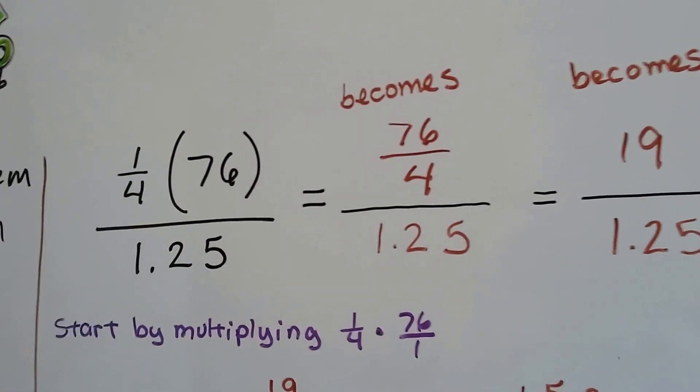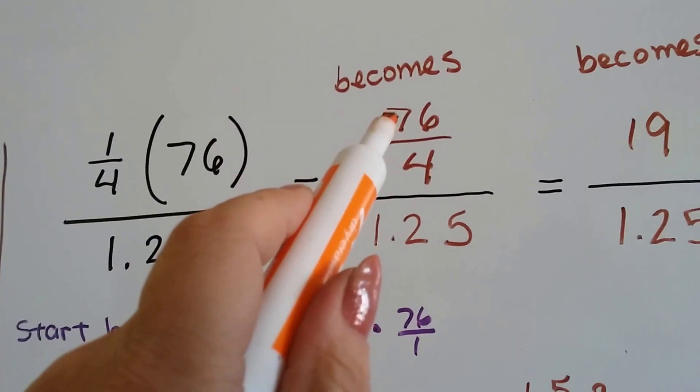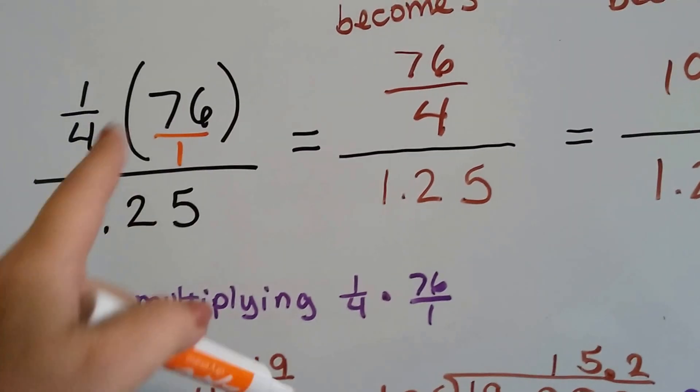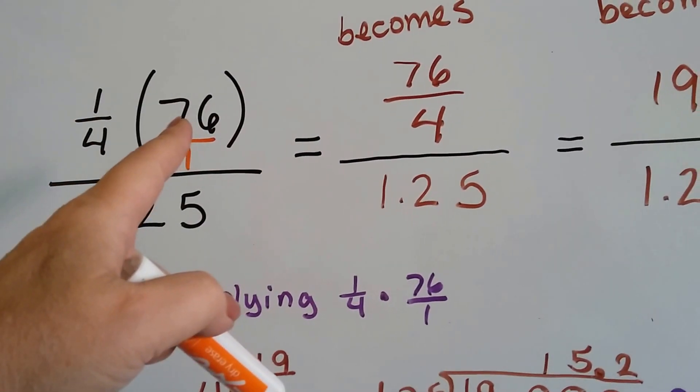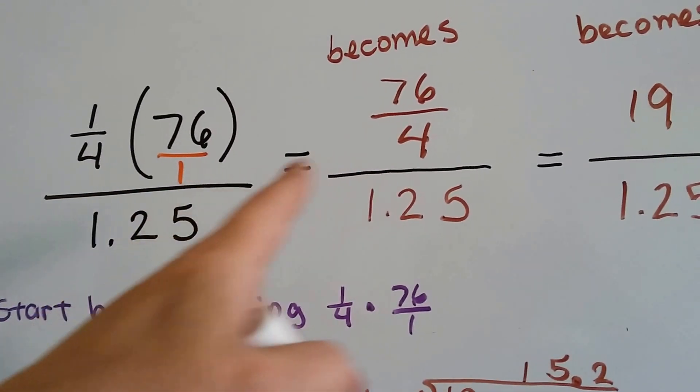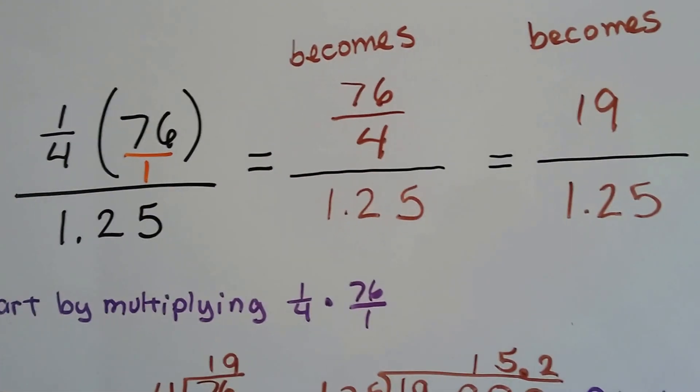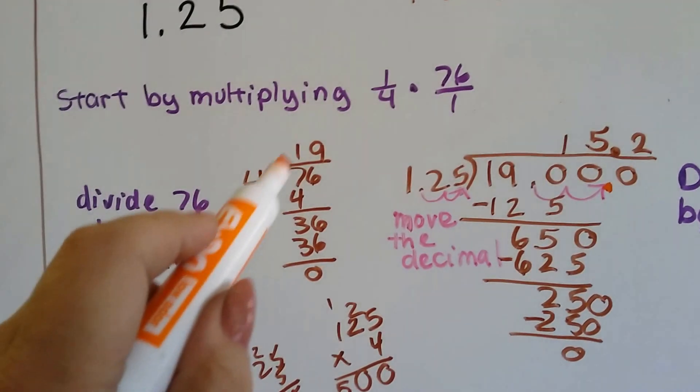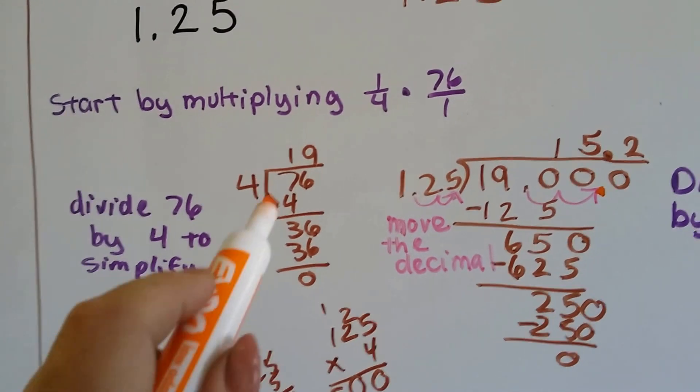So, we're going to multiply one-fourth times seventy-six, and it comes out as seventy-six-fourths, because we can put a little invisible one here. Seventy-six times one is seventy-six over four, and we get seventy-six-fourths. Then all we have to do is divide the seventy-six by four, and that is nineteen.